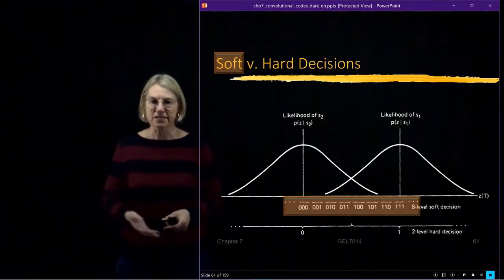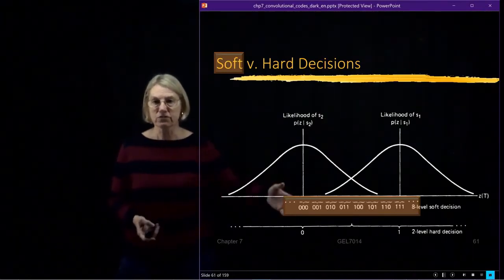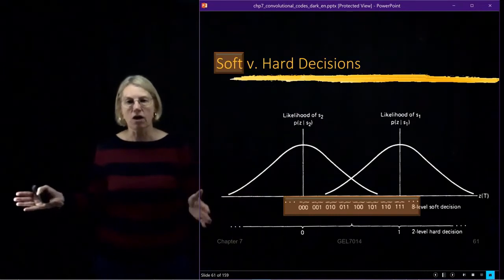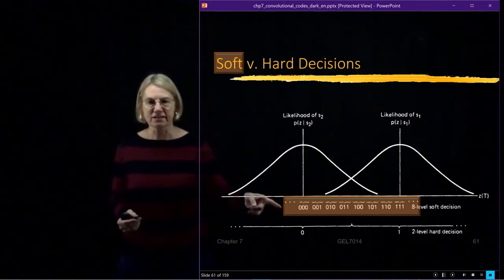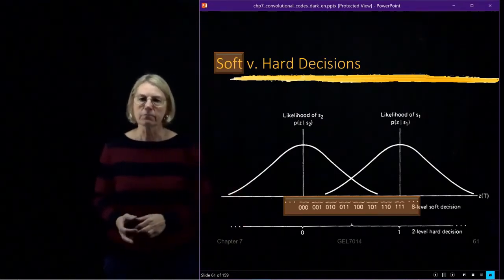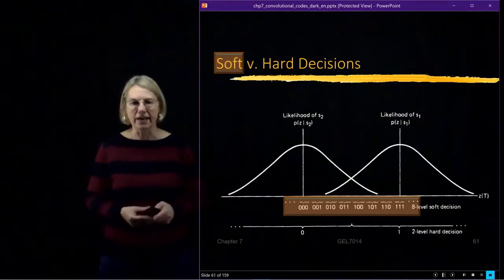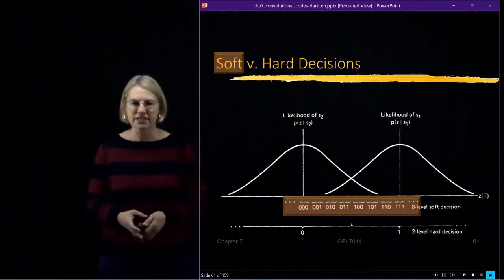So you don't want to increase the complexity too much. And there's no point in making it truly continuous, all values, that you can quantize it and still get virtually all the improvement you would get in moving from a hard to a soft decision.